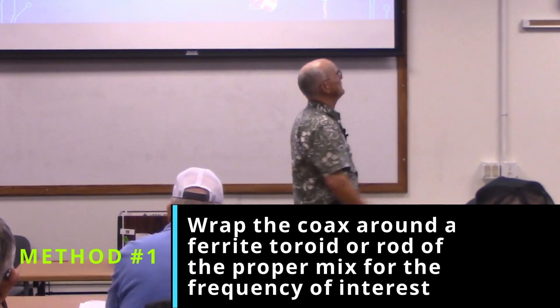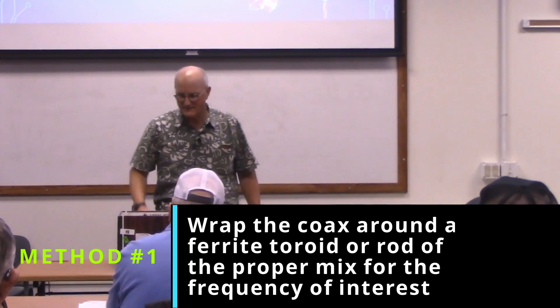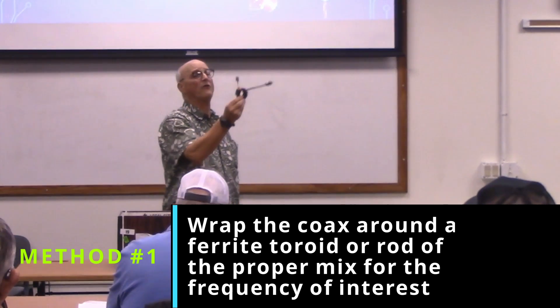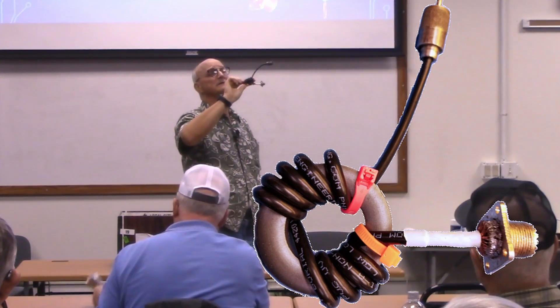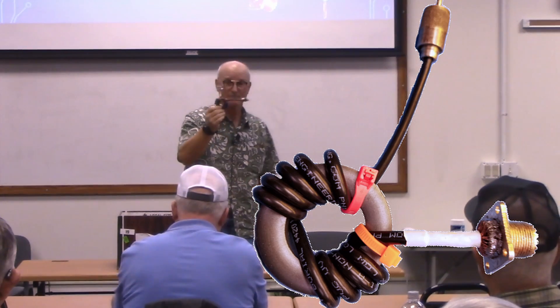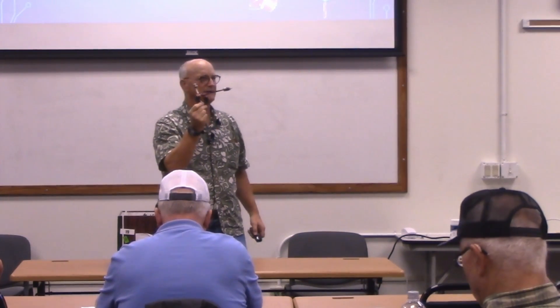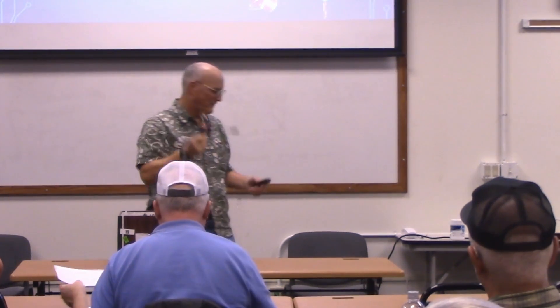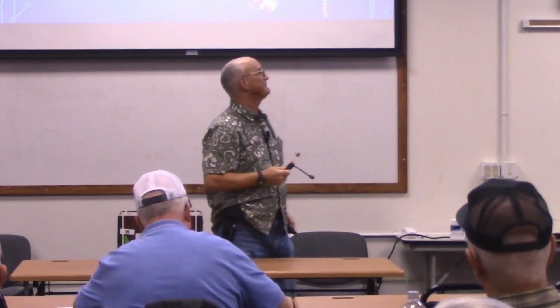One way to do this is to wrap the coax around the proper mix of a toroid core or a rod. This is one that I built here - this ferrite core is not cheap, about fifteen to sixteen dollars for that core. I bought a rod and it cost twenty-five bucks. Now you know why some ferrite common mode chokes are expensive. But this is still cheaper than buying a commercial one.